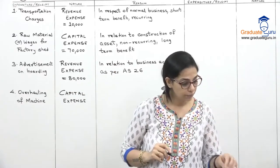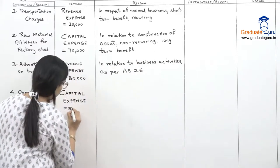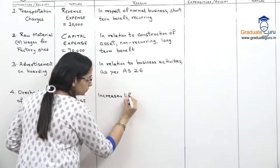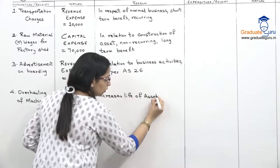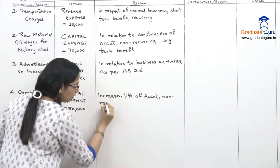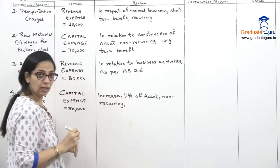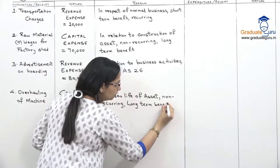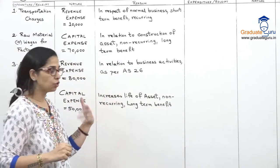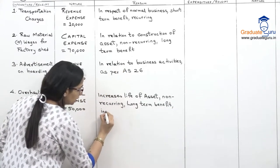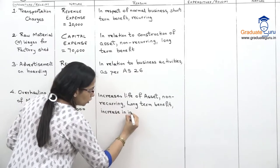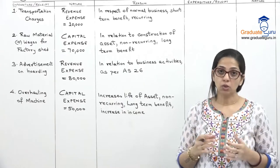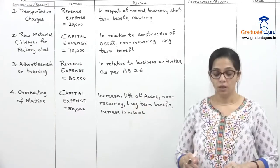Capital expense of 50,000. Reason number one: it increases the life of the asset, so I can use it longer. It is non-recurring. It gives long-term benefit because it has increased the life of the asset. You can also add that it increases income — generally after overhauling, machinery works faster and better, so it is also increasing income.